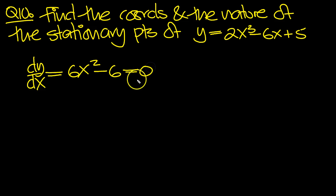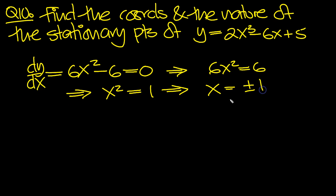Let that equal 0 to find the turning points. And we see that that implies that 6x squared is equal to 6. That tells us that x squared equals 1. And in turn that tells us that x is equal to plus or minus 1. So there's our turning points then, our stationary points.